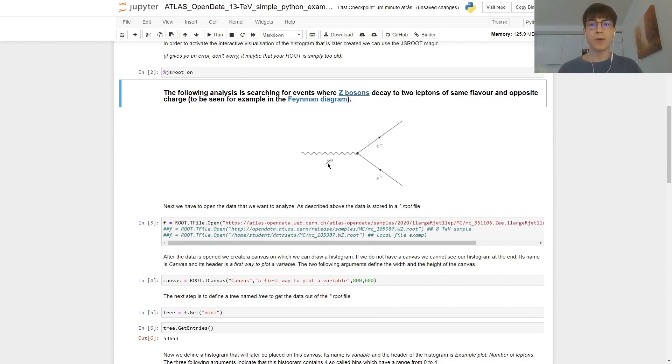Here we have a Z boson decaying into an electron and a positron. Charge is conserved since before we have zero charge, and then later the positive and negative charge cancel each other into a net zero. Hence, we'll be dealing with the analysis of particularly these two leptons.